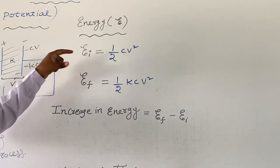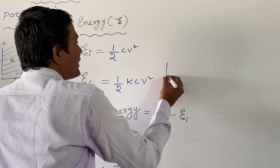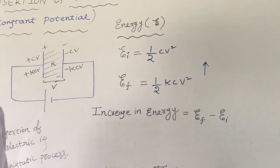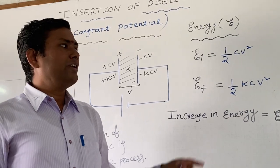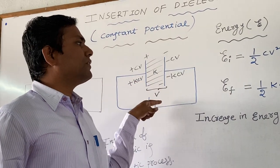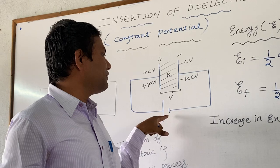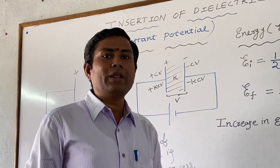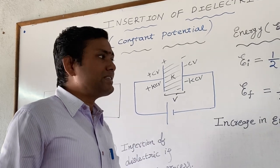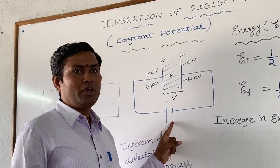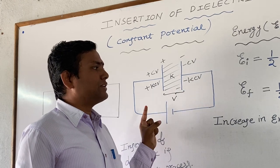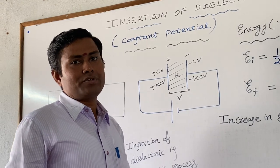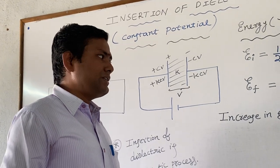Clearly we see the energy is increasing. So who will provide that energy to the capacitor? Energy is always conserved, but here after the insertion of the dielectric when it is connected to the battery, the energy is going to increase. The energy is supplied by the battery. So the battery is supplying charge, and due to that supply of charge, the electrostatic potential energy U increases.